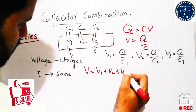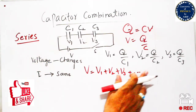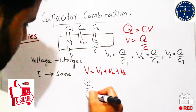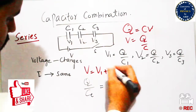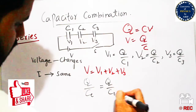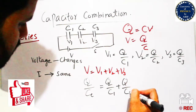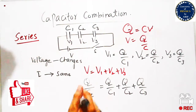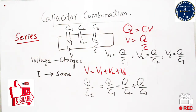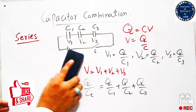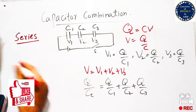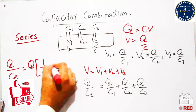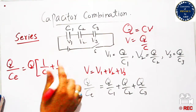The total voltage is V = V1 + V2 + V3. The total voltage is also equal to Q/Ce, where Ce is the equivalent capacitance. Substituting V1 = Q/C1, V2 = Q/C2, and V3 = Q/C3 into the expression, we get Q/Ce = Q/C1 + Q/C2 + Q/C3. Taking Q as common from the right-hand side gives Q/Ce = Q × (1/C1 + 1/C2 + 1/C3).